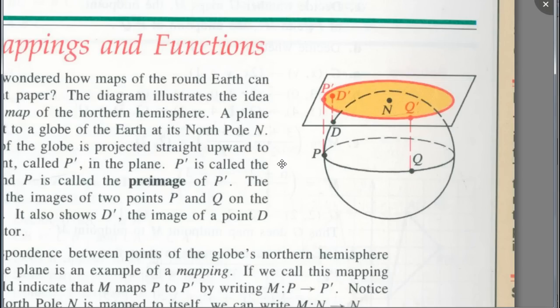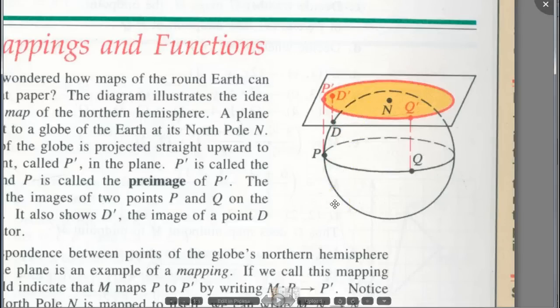Now, if you're mapping not just the hemisphere but the whole sphere, would this be a one-to-one mapping? No, then it would not be a one-to-one mapping because you'd have the same point right underneath. Does that make sense?